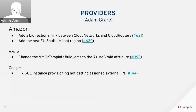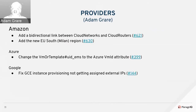For providers it was mostly bug fixes this sprint. On the Amazon side, Dan added a direct link between a cloud network and a router — before you could only get from routers to networks indirectly. We also added the new Milan EU South region on Amazon. For Azure, we changed the value of uid_ems to be the Azure VM ID attribute, as some customers wanted that available.